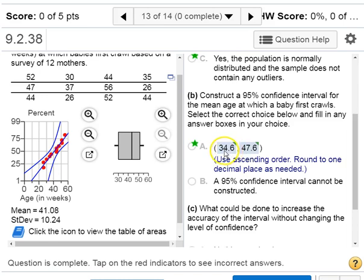Because right now we see it's ranging over about 13 weeks here. So that's our estimate of the mean age at which a baby first crawls. 13 weeks is pretty wide.